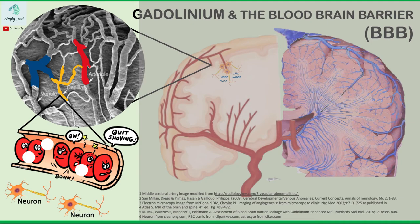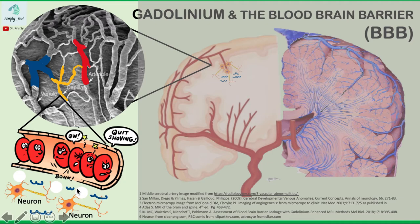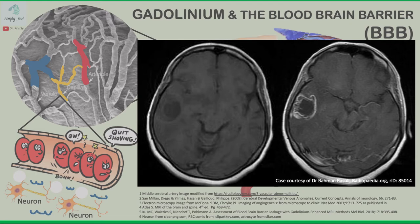Now, what if the capillaries are diseased? Gadolinium will now be able to enter the interstitium. Will this gadolinium be able to enter the neuron and become intracellular? The answer is no — the gadolinium stays extracellular. In the extracellular space or interstitium, you have water, scribbled here in blue. Gadolinium will then exert an effect on this interstitial water, making the T1 relaxation time short. T1 shortening means we're going to have a bright signal on T1-weighted images.